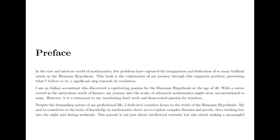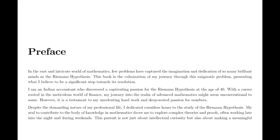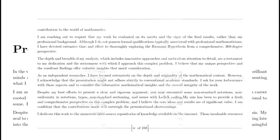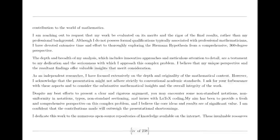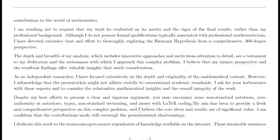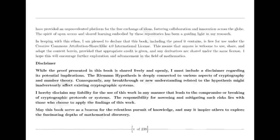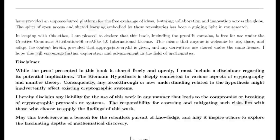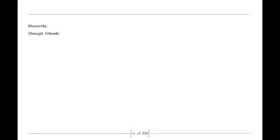We begin with the remarkable contributions of Leonard Euler. In the 18th century, Euler made groundbreaking discoveries in understanding infinite series. He introduced the idea that the harmonic series — the sum of the reciprocals of the positive integers — could be expressed as a product over prime numbers. This was a revolutionary insight, linking the harmonic series to the complex and profound properties of prime numbers. Euler's formula was one of the first indications of the deep connections between primes and series.